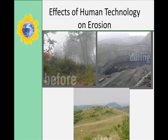Human technology has contributed to the erosion of the landscape. For example, construction and mining projects have moved great quantities of rock and sediment from their original locations. By destroying plant cover, poor farming and forestry practices have left soil exposed and unprotected. The exposed soil is quickly eroded by running water and wind.